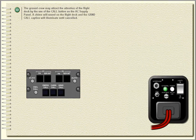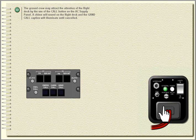The ground call button sounds a horn in the nose gear bay to attract the attention of the ground crew. The ground crew may attract the attention of the flight deck by use of the call button on the AC supply panel; a chime will sound on the flight deck and the ground call caption will illuminate until cancelled.